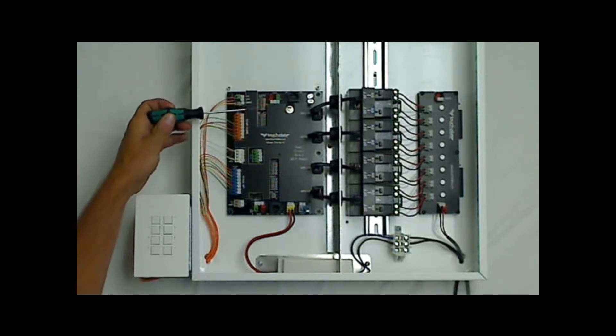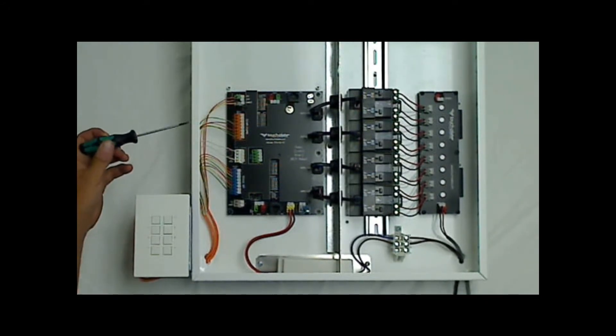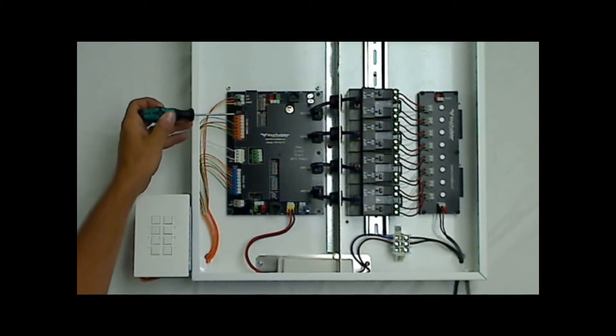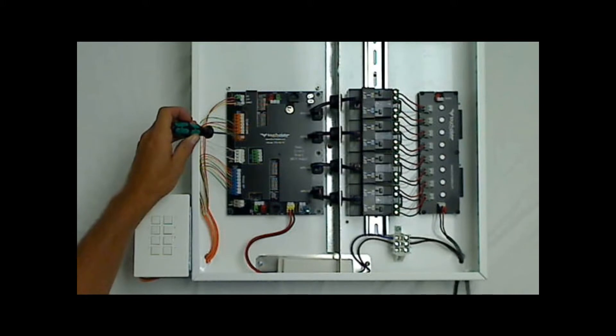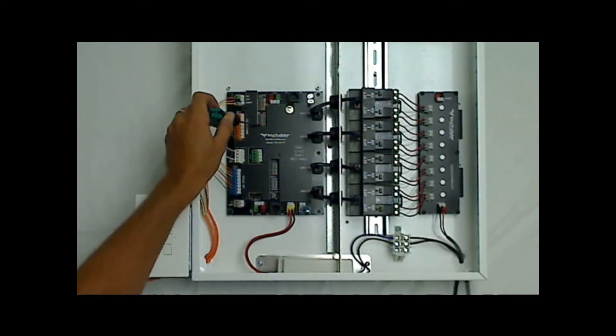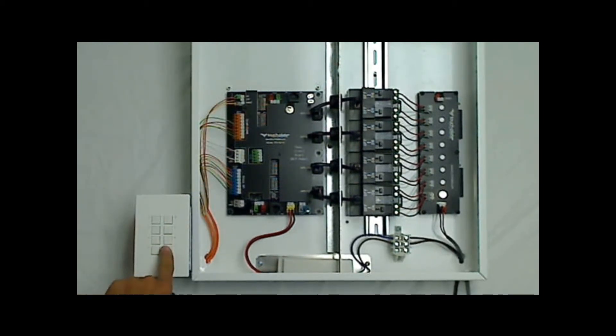The second dip switch block is for a momentary and maintained function. The system comes from the factory in a momentary preset. But if I would like relay 8 to be on a maintain, then I would select dip switch number 8, move it to the right in the maintain function, and it is now set up for a maintain cycle.